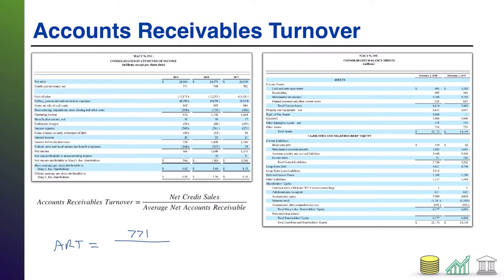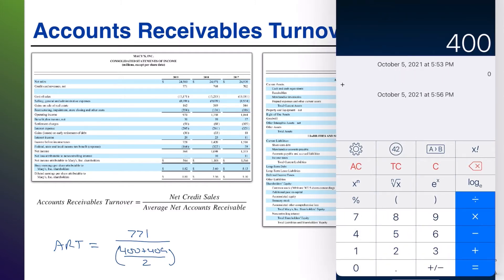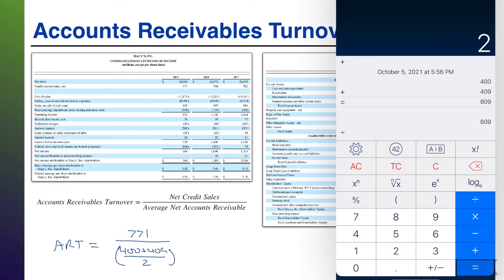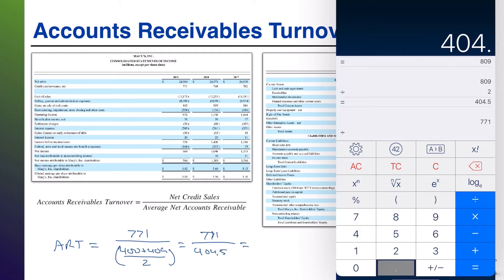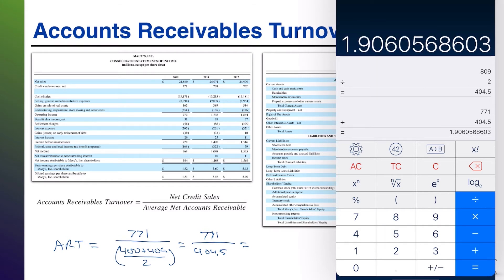I need the average receivables, so I'm going to look at last year's number, which was 400, and this year's number, which is 409. I'm going to add those together — 400 plus 409 — and divide by two. That gives us 404.5. So this is net credit sales of 771 divided by average net accounts receivable of 404.5, which equals 1.91.